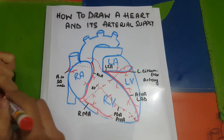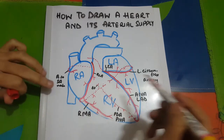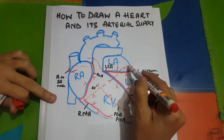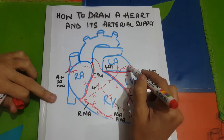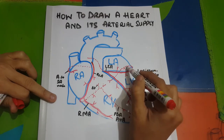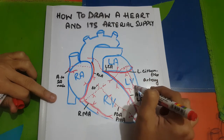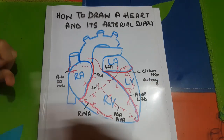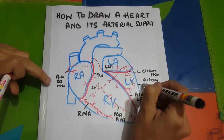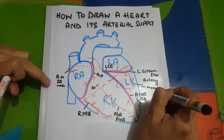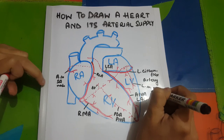One artery we forgot to draw is the left marginal artery. Just as we have a right marginal artery, there is also a left marginal artery, which is a branch of the left circumflex artery on the posterior side. This is the left marginal artery.